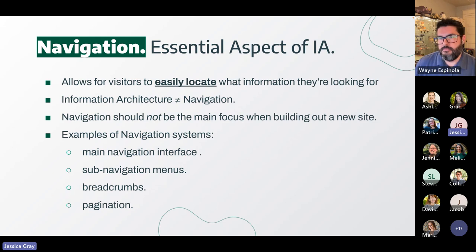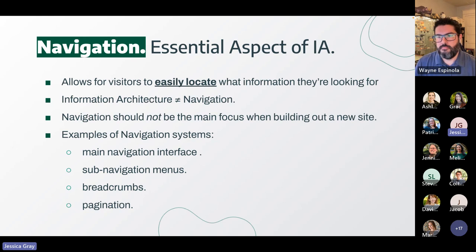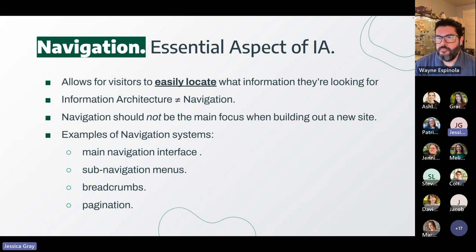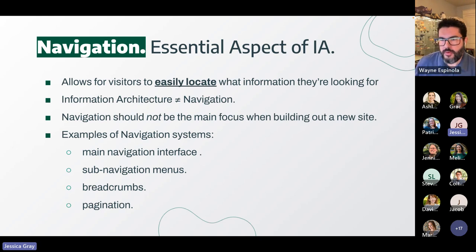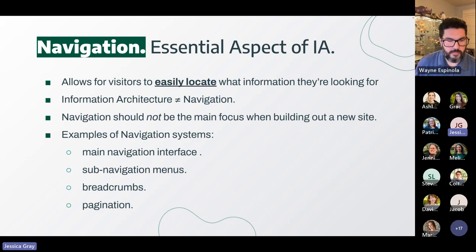Navigation systems — this is probably the one information architecture system you're all most familiar with. Navigation is the system that allows visitors to easily locate what they're looking for. Regardless of which page they land on first, they should always be able to find what they need without issue. Navigation is a system within information architecture — you should never focus primarily on navigation when building out a new site, because in the early stages you don't know the full scope of its content and functionality. A navigation system might include main navigation interfaces, sub-navigation menus, breadcrumbs, and pagination.